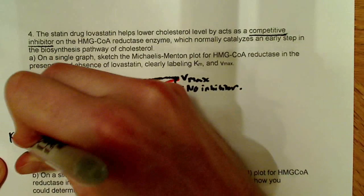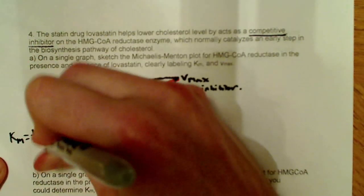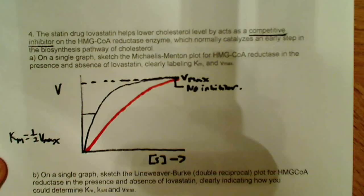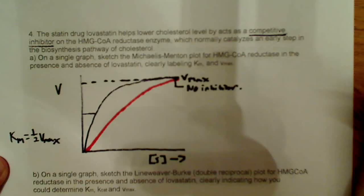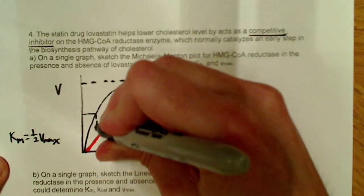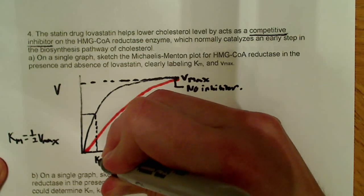Now, if I want to label the Km just intuitively, we know that the Km, remember, recall, Km is equal to one-half Vmax. So, roughly, I'm going to say that's about half right there, and then I'm going to just drop my line down here, just like that, with a dotted arrow, and I'm going to say Km.